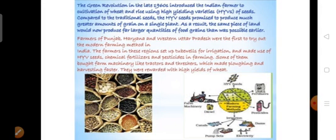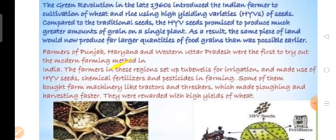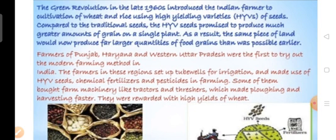India adopted modern farming methods. Since the 1960s, India became successful in becoming self-sufficient in the availability of food grains. Before the 1960s, India was importing food grains from foreign countries to feed its large population.